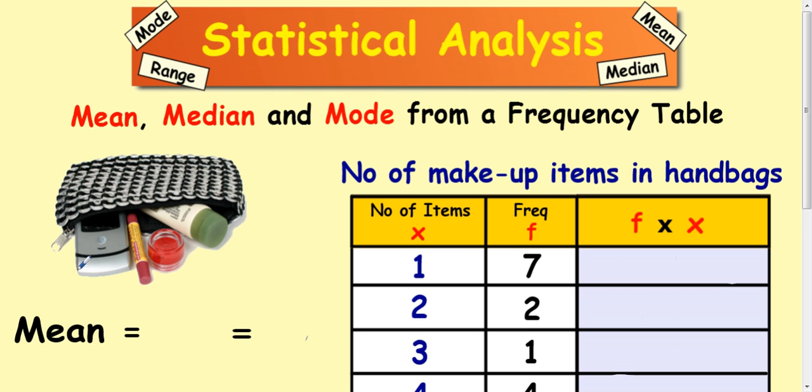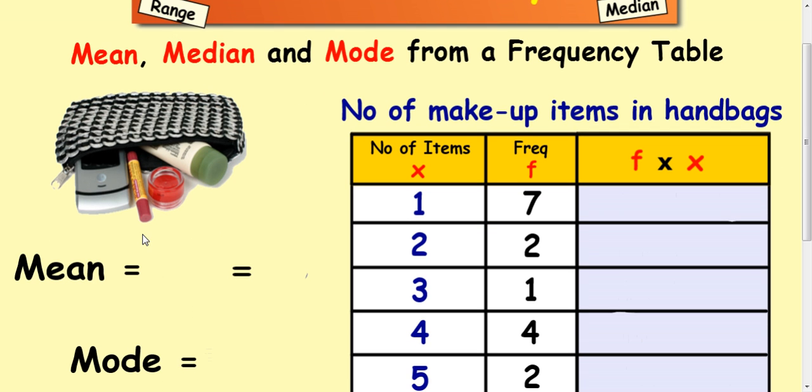Now once you've got the information in the frequency table you might want to then calculate some statistical analysis on it. So you might want to calculate some averages. How would you do that? OK, well there's a technique to do that. So let's look at this example here.